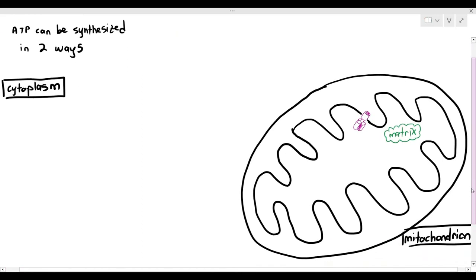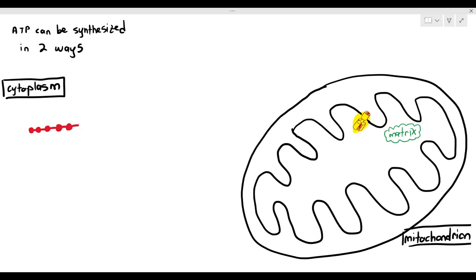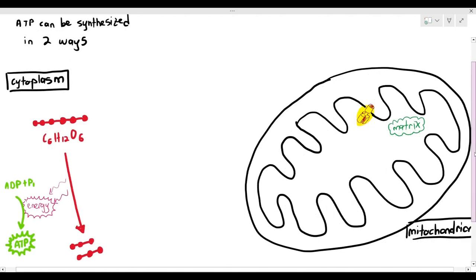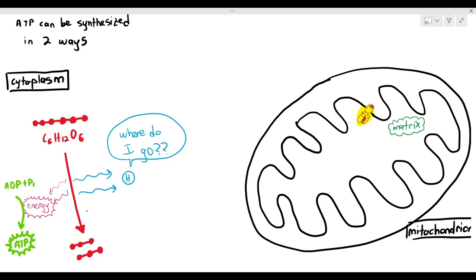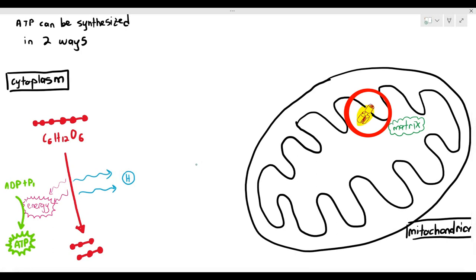If you have a glucose molecule and you break it down, it releases some energy which is used to directly join ADP and phosphates together to ATP — substrate-linked reaction — but it also releases hydrogen atoms. Those hydrogen atoms don't know where to go, because the hydrogen atom is now in the cytoplasm, and the ATP synthase which needs the hydrogen ions is in the inner membrane, so they are quite far away. This is where the cell needs to enlist the help of carriers, known as hydrogen carriers. There are two types: NADs and FADs.